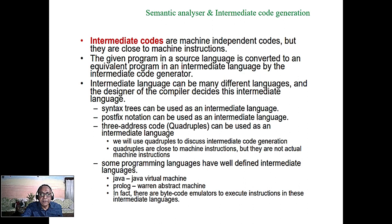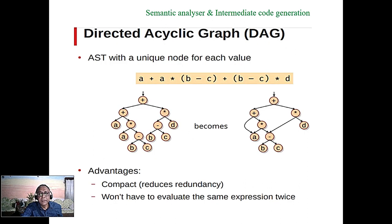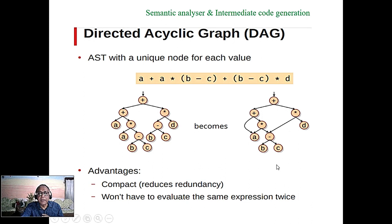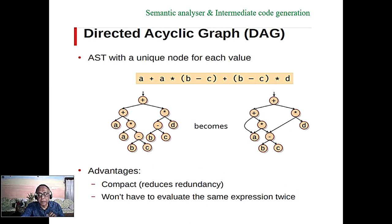Some programming languages have very different intermediate languages — for example, Java and Prolog. On the left side is an abstract syntax tree; on the right side is a directed acyclic graph, where the b minus c computation appears once and is reused. This reduces redundancy and is the advantage of the directed acyclic graph as a tool used in the intermediate code generation phase.